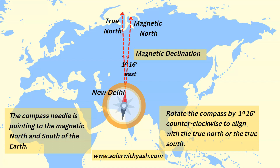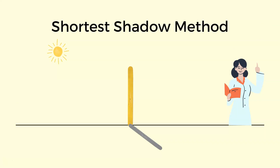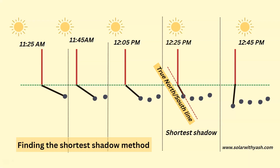By using magnetic declination and the magnetic compass, we can find the true north-south direction and use it to place our solar panels for optimum sunlight and maximum electricity. Another method is the shortest shadow method. This method is based on the principle that when the sun is at its highest point at noon, the shadow formed is the shortest. When you join the line at the ends of the shadow, it gives you the true north-south line.